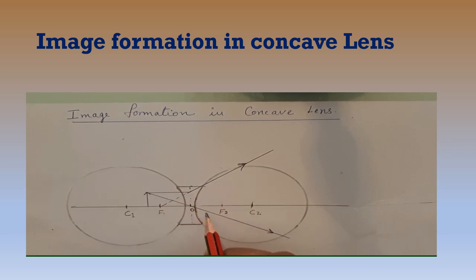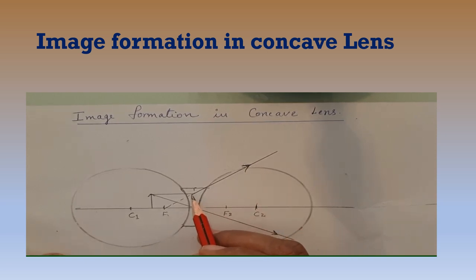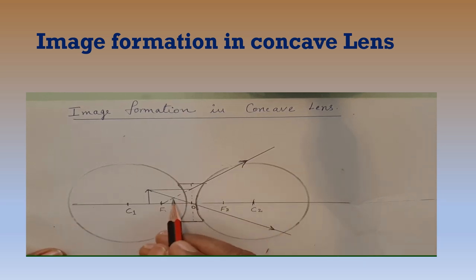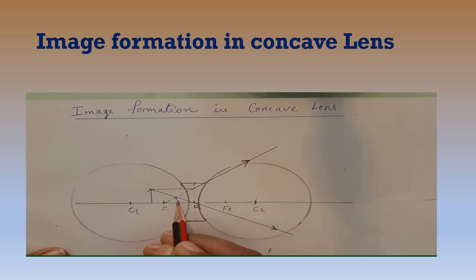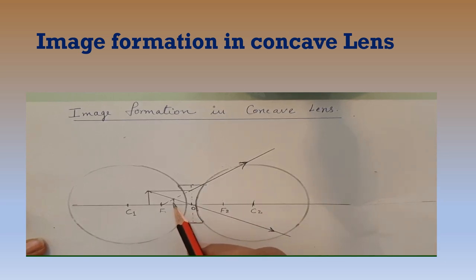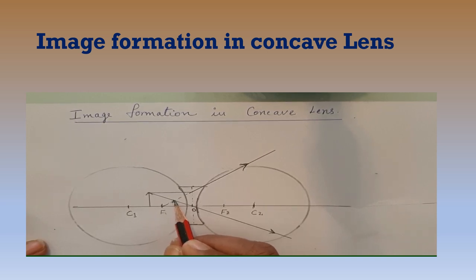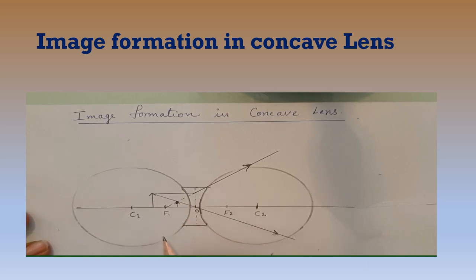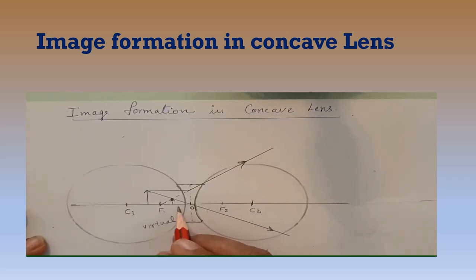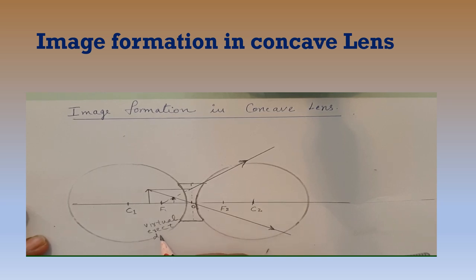Now, see these two rays. The first ray passes through the optic center. The second ray diverges out from the lens but appears as if it is coming from the focus. These two rays intersect at a point — there we get the image. Since the rays are not actually meeting but appear as if they are joining, we get a virtual image. The image formed is virtual and erect. Also, it is a diminished or small image.